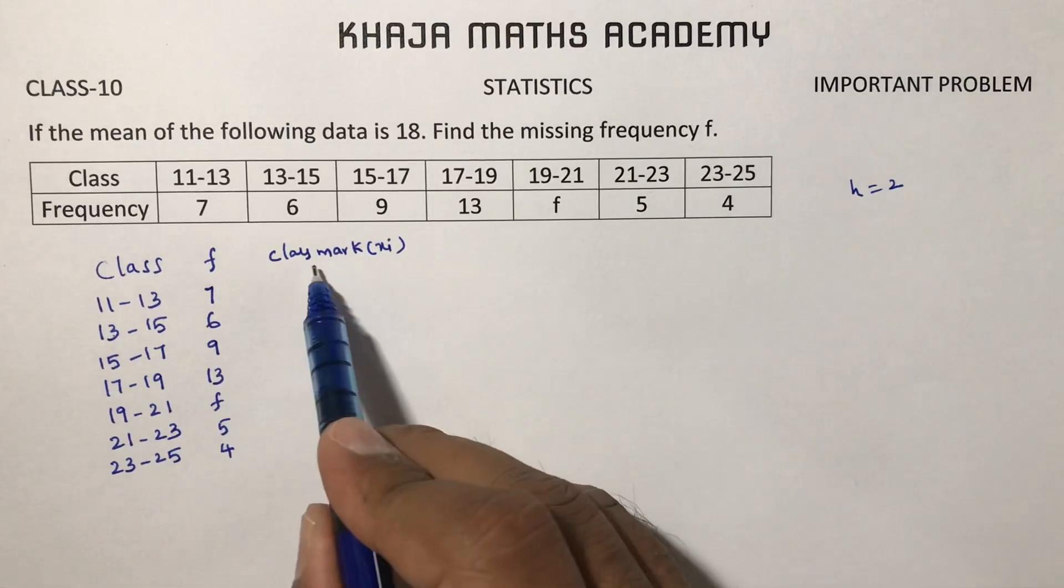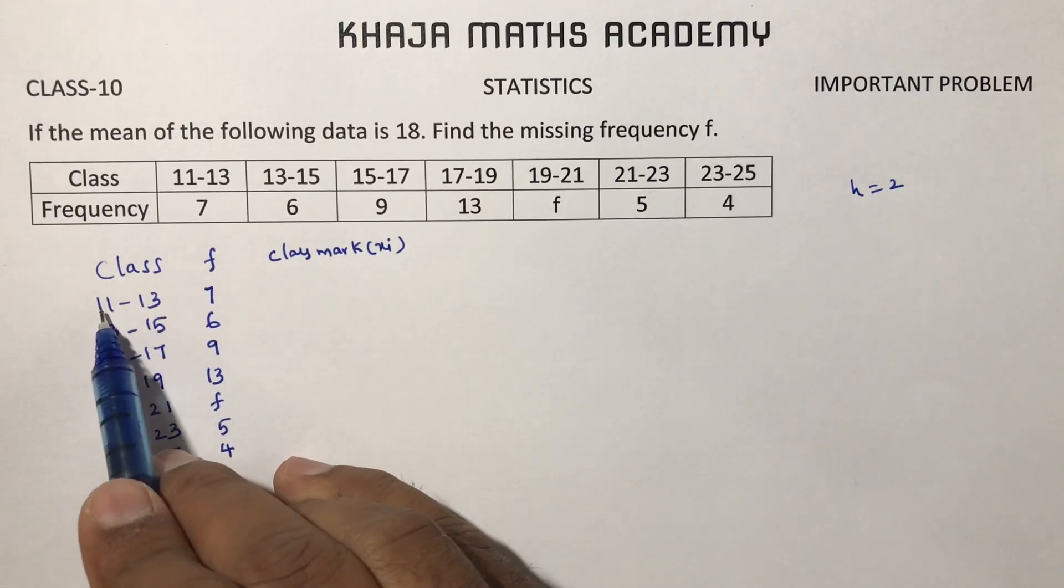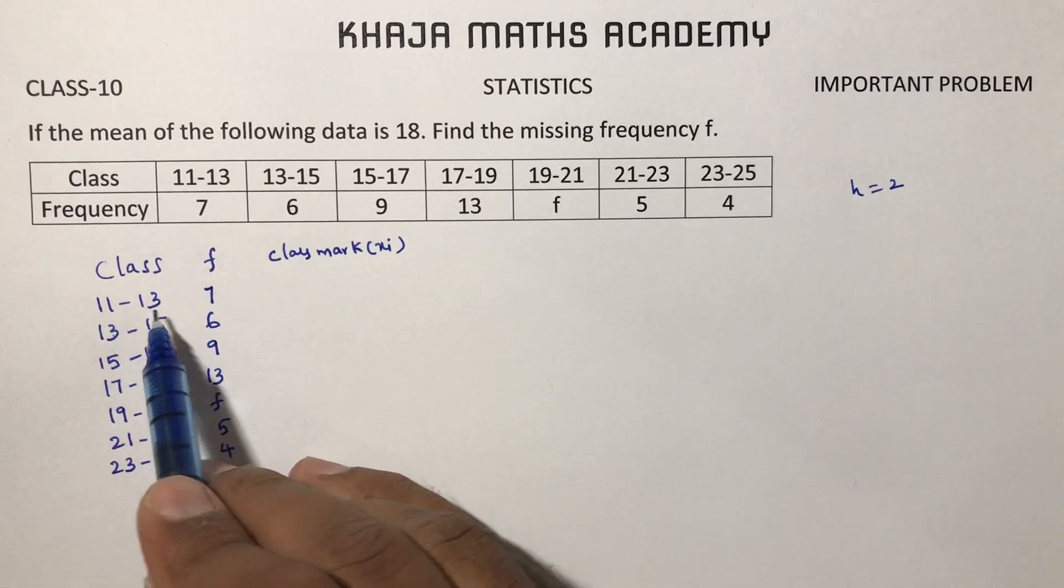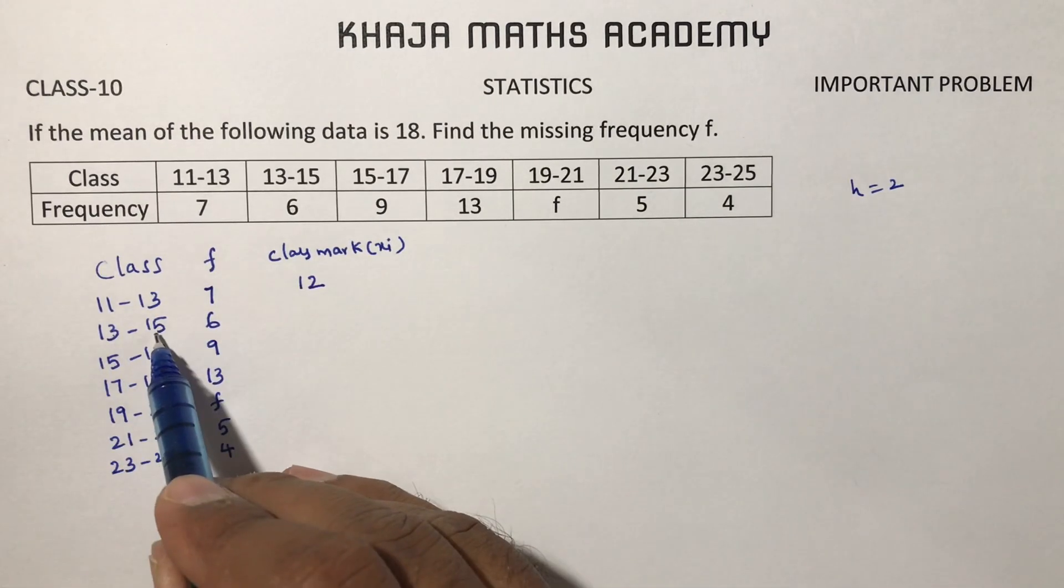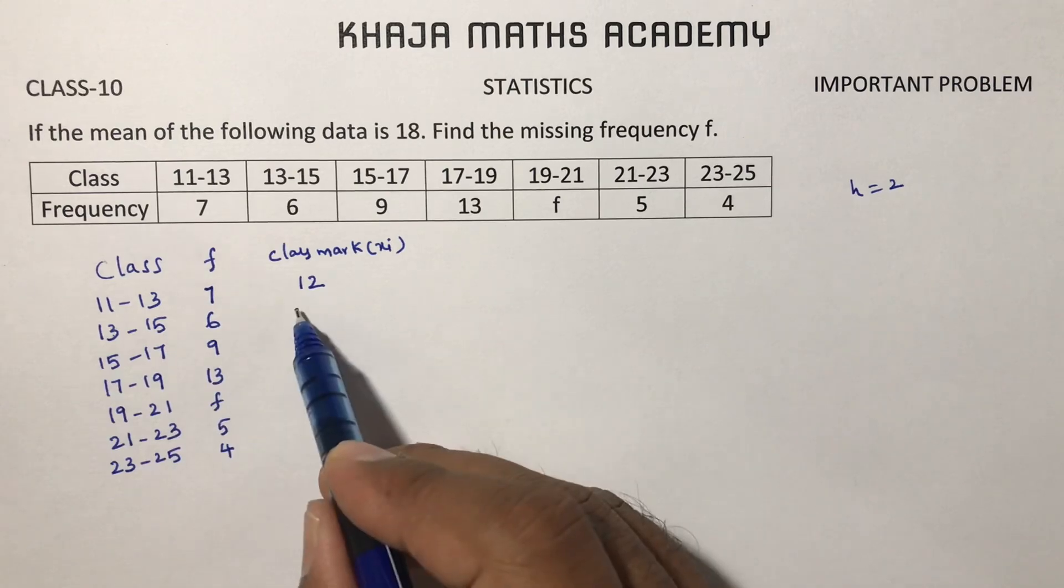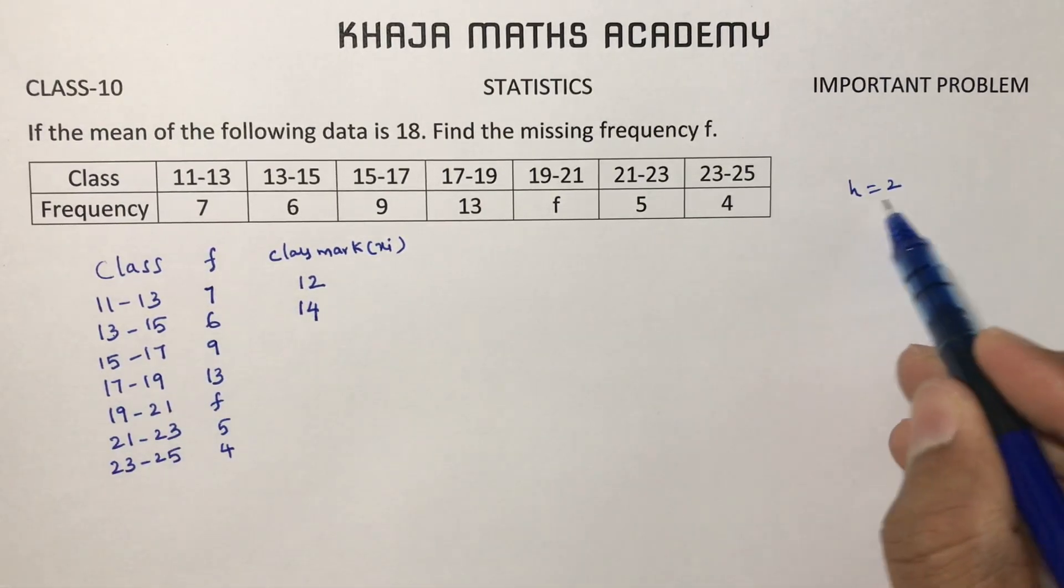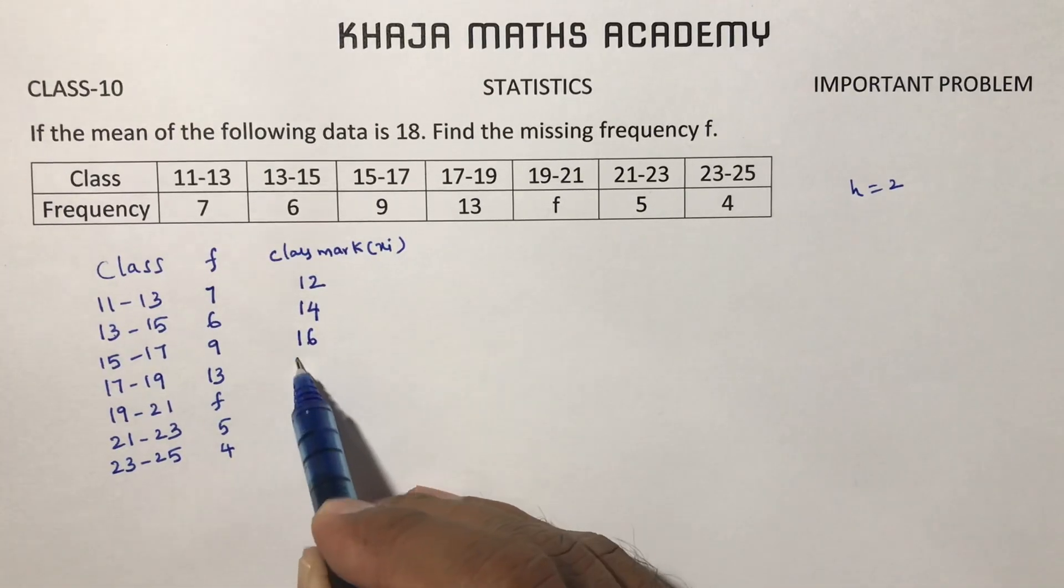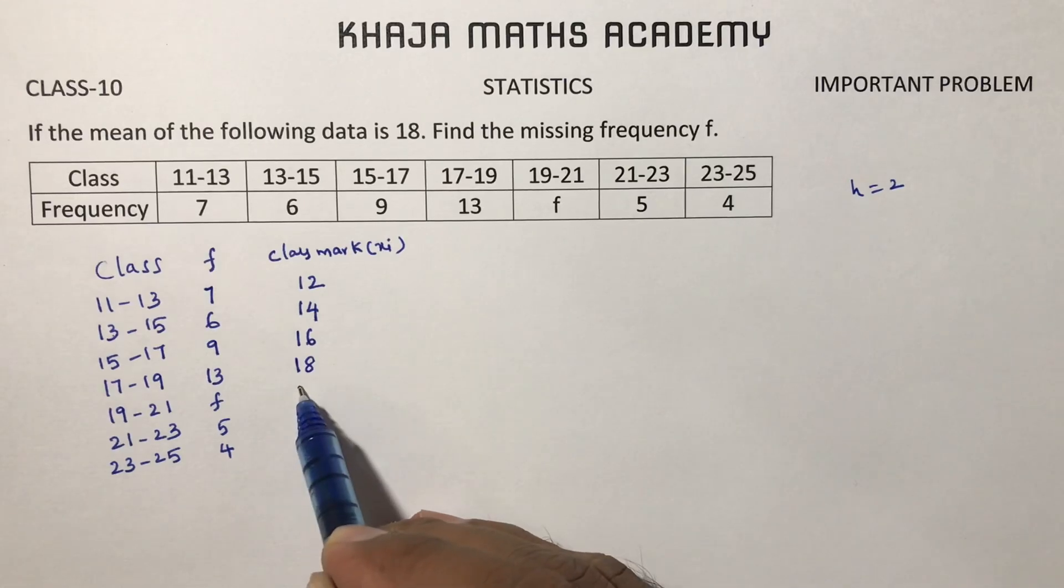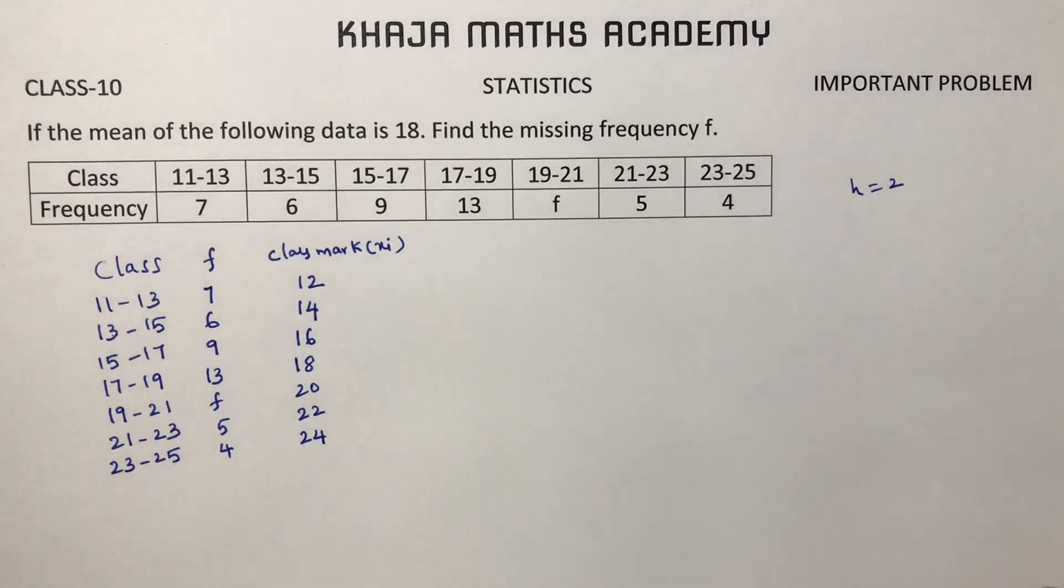Class mark: how will you calculate class mark? Add the lower limit and upper limit and divide it by 2. 11 plus 13 is 24, 24 by 2 is 12. 13 plus 15 is 28, 28 by 2 is 14. Instead of calculating for every class, just keep on adding the value of h. 14 plus 2 is 16, 16 plus 2 is 18, 18 plus 2 is 20, 22, 24.